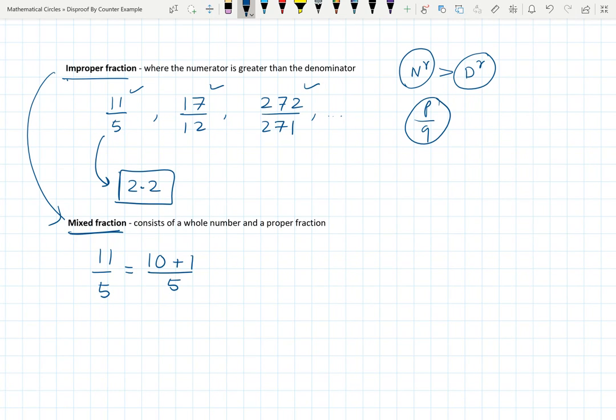The largest multiple of 5 less than 11 is 10. So I can write this as 10/5 plus 1/5. That is equal to 10/5 is 2, 2 plus 1/5.